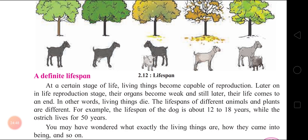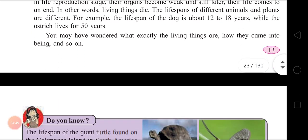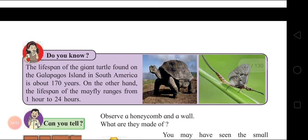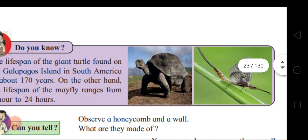The lifespan of a giant turtle found on the Galapagos Island in South America is about 170 years. On the other hand, the lifespan of the mayfly ranges from one hour to 24 hours.